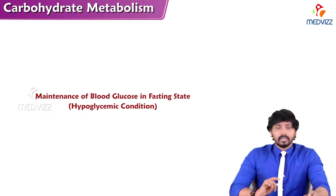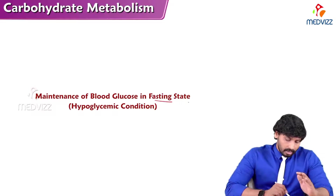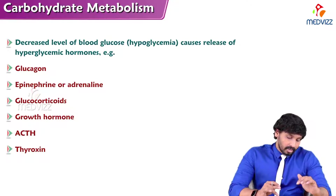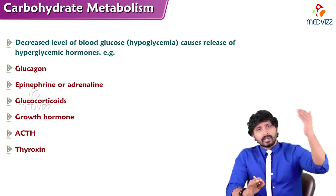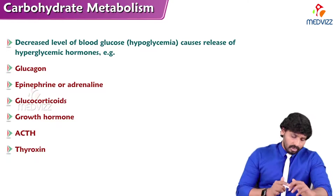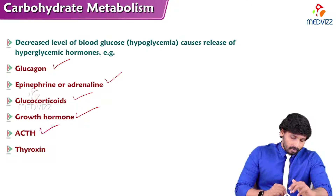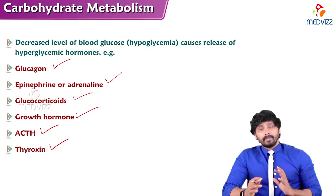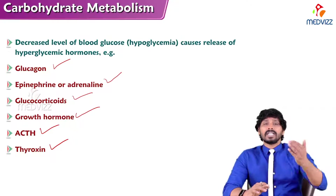Now the other condition: fasting state — a hypoglycemic condition. In hypoglycemia, blood glucose levels are going below the normal range. To maintain normal levels, several hormones come into action: the major one is glucagon, then epinephrine (adrenaline), glucocorticoids, growth hormone, adrenocorticotropic hormone, and thyroxine. All these hormones play a major role in hypoglycemia and tend to raise blood glucose levels — they are therefore known as hyperglycemic hormones.